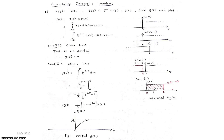For the first problem, perform the convolution between h(t) and x(t), where h(t) equals u(t) and x(t) equals e to the power minus at times u(t), where a is greater than 0. Find y(t) and plot the output. To perform the convolution, write the convolution integral: y(t) equals x(t) star h(t), which equals the integral from minus infinity to plus infinity of x(tau) times h(t minus tau) d tau. Replacing t by tau: x(tau) equals e to the power minus a tau times u(tau), and h(t minus tau) equals u(t minus tau).